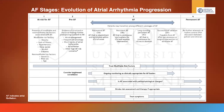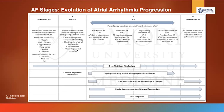Stage three is what we traditionally think of as AFib: paroxysmal, persistent, and long-standing persistent. 3A is paroxysmal AFib (less than seven days), 3B is persistent (greater than seven days but less than 12 months), 3C is long-standing persistent (greater than 12 months), and now 3D is a new category for patients who have had a successful ablation. Stage four is permanent atrial fibrillation. Importantly, risk factor modification should be done from stage one through stage four.